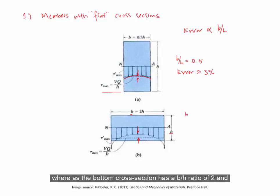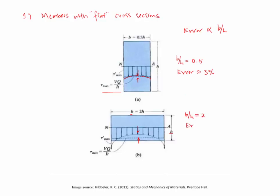Whereas the bottom cross-section has a b over h ratio of 2, and the error here is about 40%.